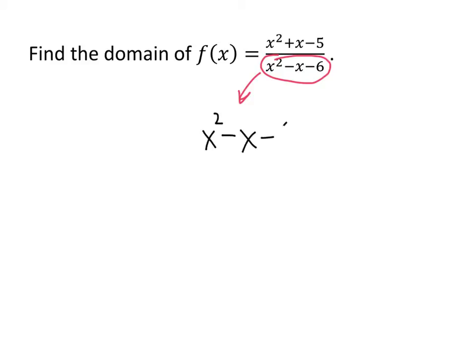x squared minus x minus 6. When does that equal 0? Well, that's a quadratic equation, so we can either factor or use the quadratic formula. This one's pretty easy to factor. We get x minus 3 times x plus 2. And we know that that gives us two solutions, x equals 3 and x equals negative 2.